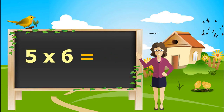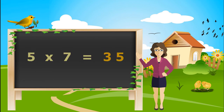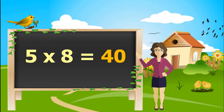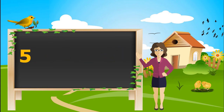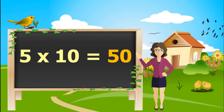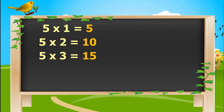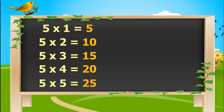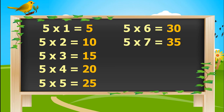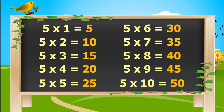5 sixes are 30. 5 sevens are 35. 5 eights are 40. 5 nines are 45. 5 tens are 50. 5 ones is 5. 5 twos are 10. 5 threes are 15. 5 fours are 20. 5 fives are 25. 5 sixes are 30. 5 sevens are 35. 5 eights are 40. 5 nines are 45. 5 tens are 50.